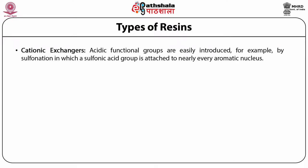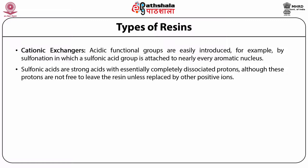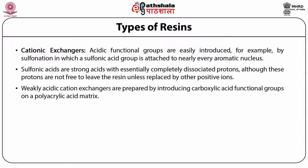Acidic functional groups are easily introduced, for example by sulphonation, in which a sulfonic acid group is attached to nearly every aromatic ring. Sulphonic acids are strong acids which are essentially completely dissociated, yielding protons, although these protons are not free to leave the resin unless replaced by other positive ions. Weakly acidic cation exchangers are prepared by introducing carboxylic acid functional groups on a polyacrylic acid matrix. The total number of equivalents of replaceable protons per unit volume of resin determines the exchange capacity of the resin. For weak ion exchange resins, the capacity is a function of pH.